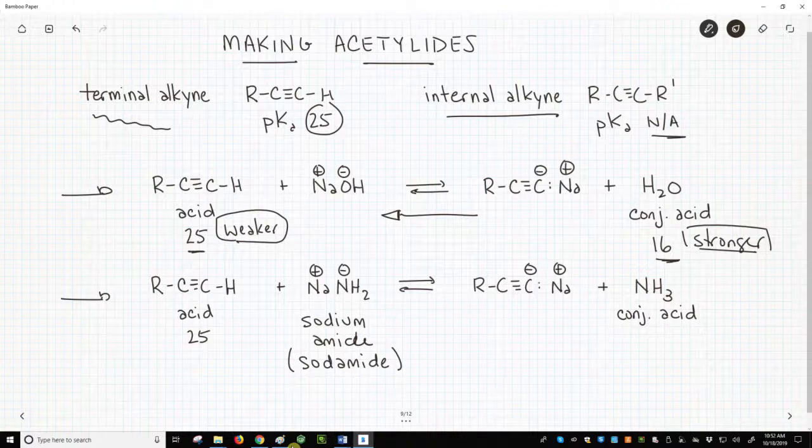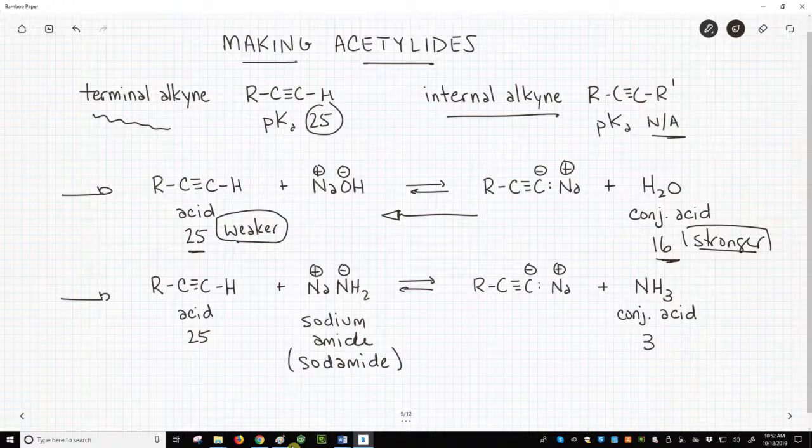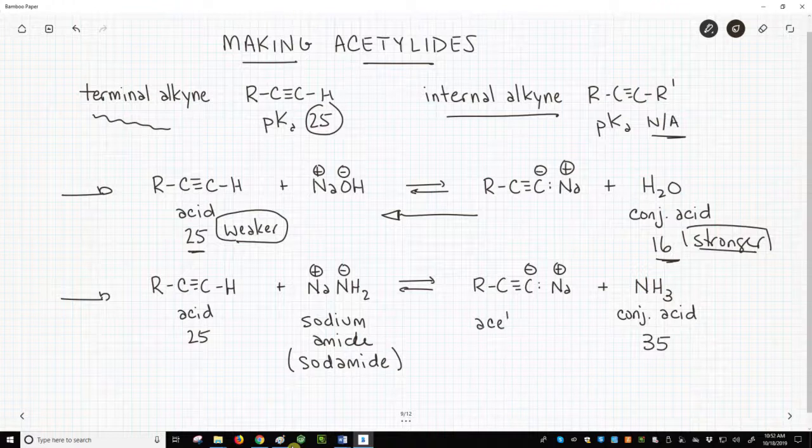The conjugate acid in the reaction is ammonia with a pKa of around 35. The conjugate base, our deprotonated alkyne, is called an acetylide.